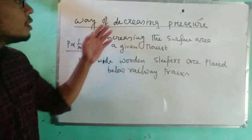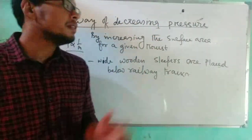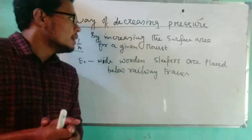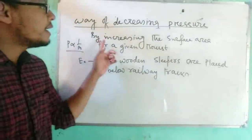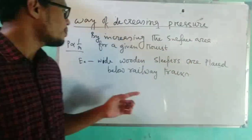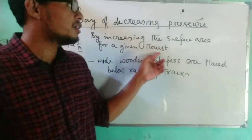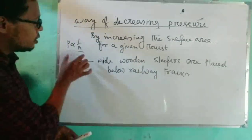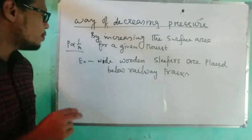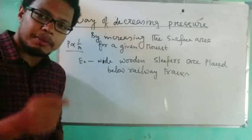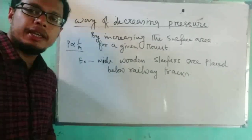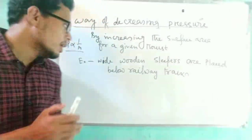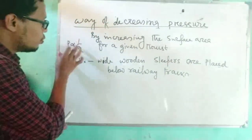Now, how can pressure be decreased? By increasing the surface area for a given thrust, the pressure can be decreased. This is because P is inversely proportional to A — as area increases, pressure decreases.